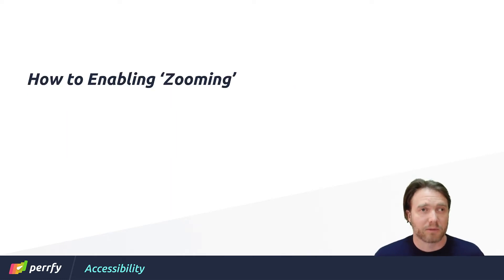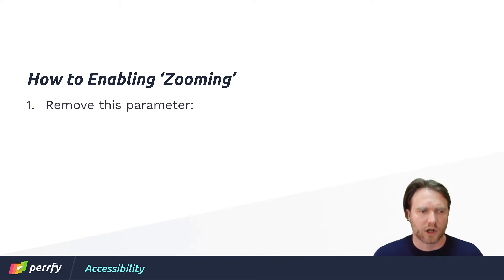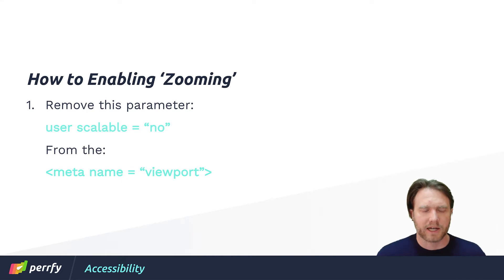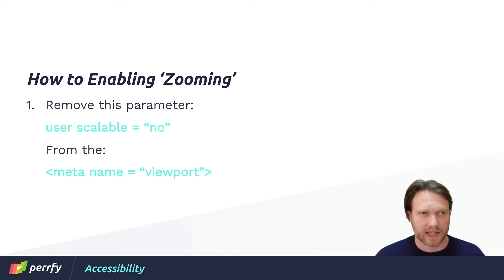So how do we enable zooming? All you have to do in your code is remove this parameter — just search for user-scalable equals no. And that's going to be in your meta name, it's going to be in your viewport. So just get that out of there, and you should be able to allow the user to zoom in.